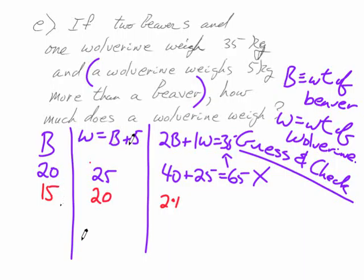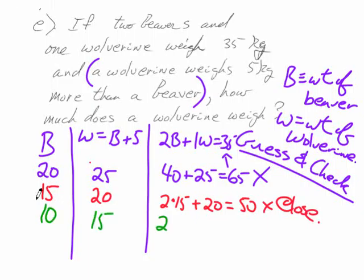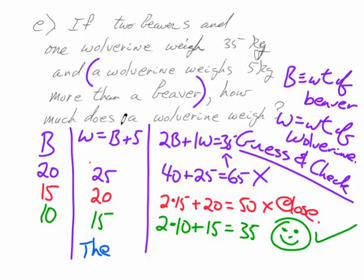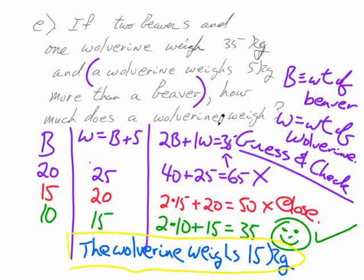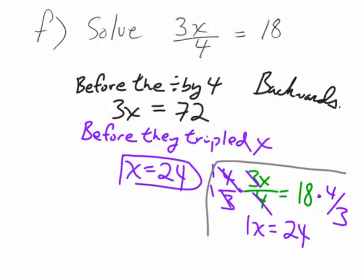Let's try 15. The weight of a beaver is 15, which means add five, so the wolverine must be 20. So two 15s is 30 plus another 20 is 50. Is 50 the same as 35? No, but we're closer. Let's try another one. Let's guess at 10. The wolverine is five more than the beaver. So 15. Two 10s and a 15. Hey, that works. That's 20 and 15 is 35. Happy face. So you just found the answer. How much does a wolverine weigh? The wolverine weighs 15 kilograms. Put a box around it so I don't have to go looking for it.